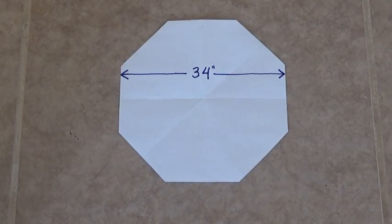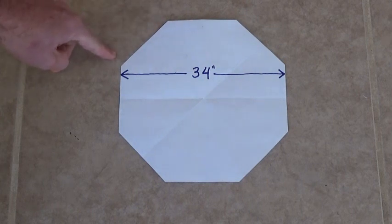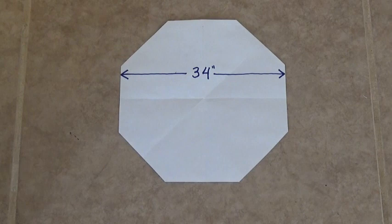Now this parachute is going to be an 8-sided parachute, 34 inches across. Now one of the important factors about this is getting the diagonal sides the same length as the straight sides. I'm going to show you a really easy method to do that.